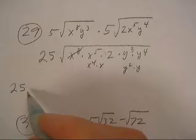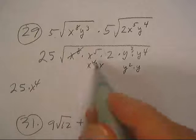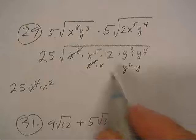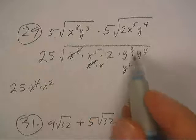For that x to the 8th, I take out an x to the 4th, for the x to the 4th, I take out an x squared, the 2 and the x are stuck.